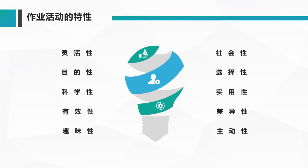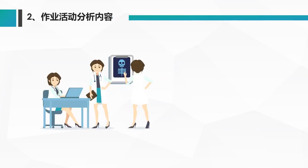作业活动的特性：第一，目的性，即采用这种作业活动要达到什么样的目的；第二，选择性，器材一定要选择适合患者自身特点的；第三，科学性，要有一定的理论依据；第四，实用性，功能可以实现；第五，有效性，对功能障碍有一定的恢复能力；第六，差异性，个体不同，作业活动方案也不同；另外还有趣味性、主动性、灵活性。